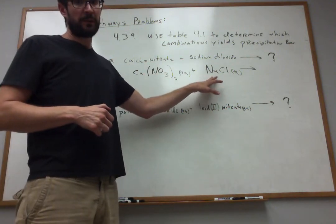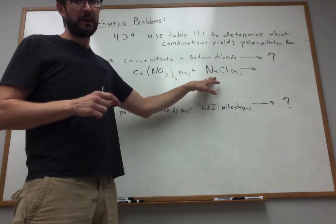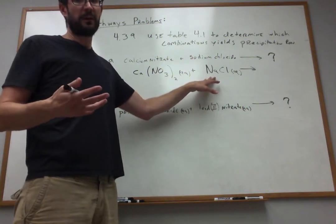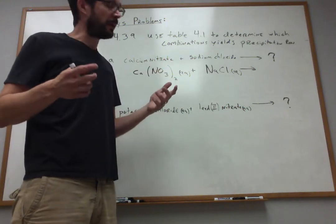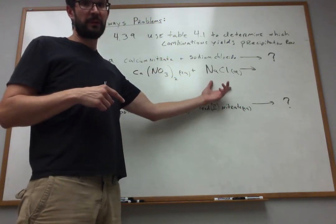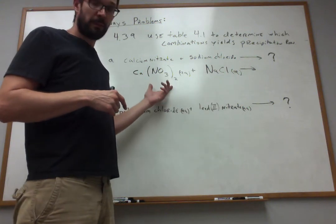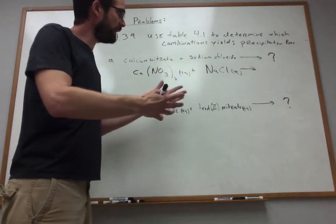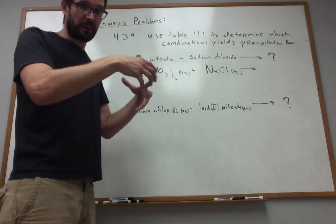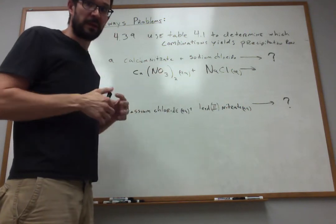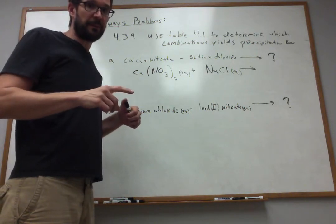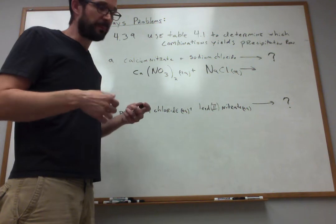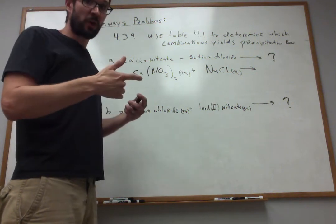Same thing goes for NaCl. For any ionic compound that's a strong electrolyte, the ions separate and float around the beaker. So if I take a water-based solution of sodium chloride and a water-based solution of calcium nitrate and mix them together, all I'm doing is mixing these ions together in one big solution. That's crucial to understand because what can possibly happen is that the ions can cross-react.